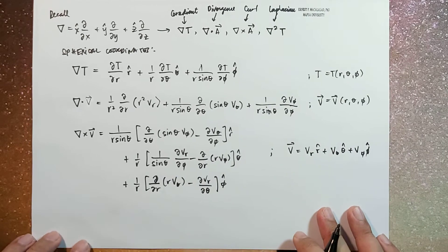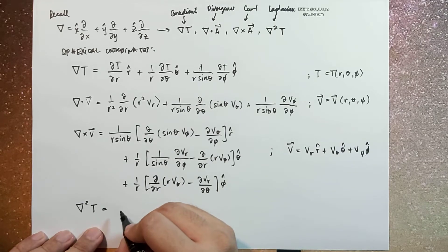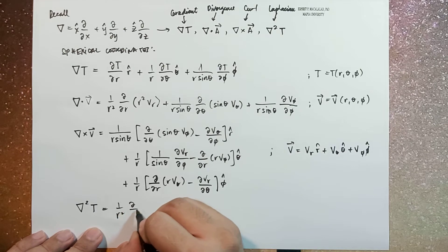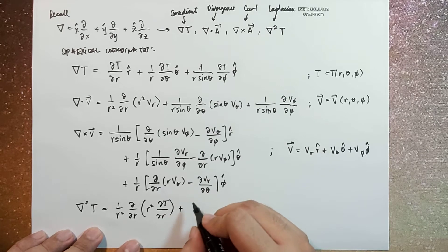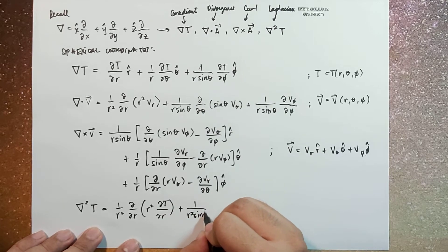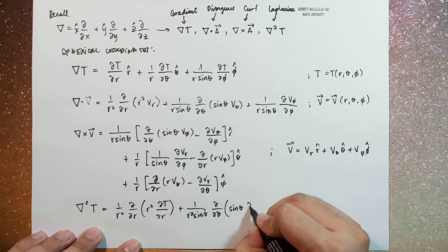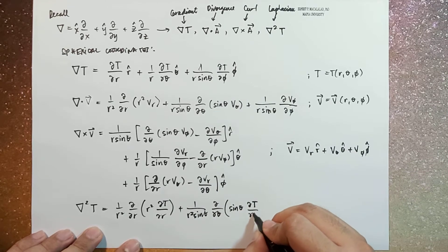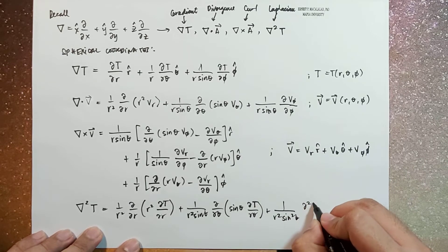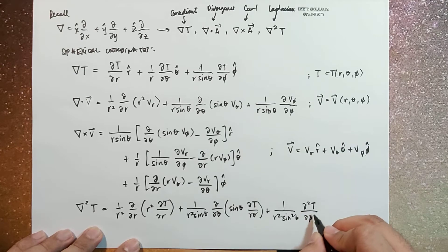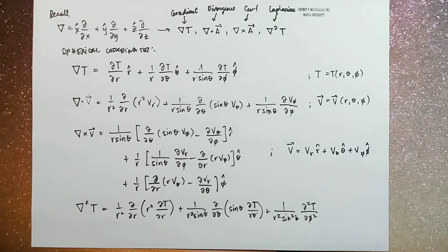To complete the set, we can define the Laplacian of T as: 1 over r² times the derivative with respect to r of r² times the derivative of T with respect to r, plus 1 over r²·sin(θ) times the derivative with respect to θ of sin(θ) times the derivative of T with respect to θ, plus 1 over r²·sin²(θ) times the second derivative of T with respect to φ.